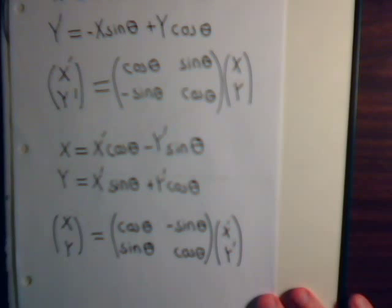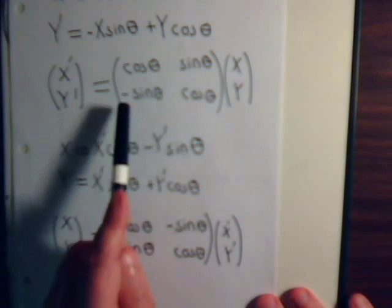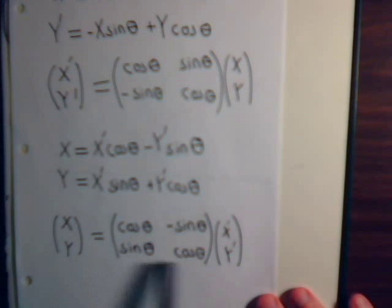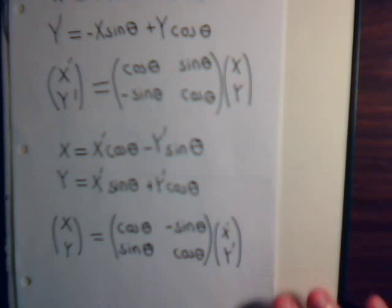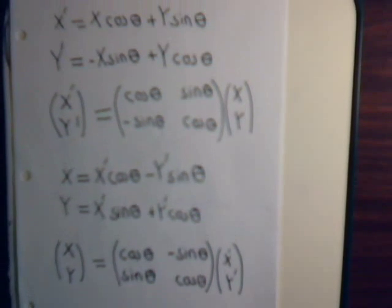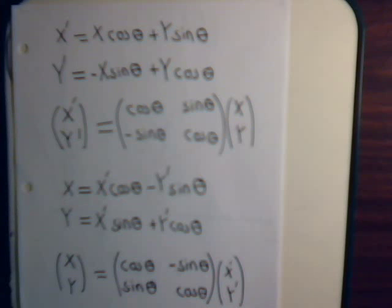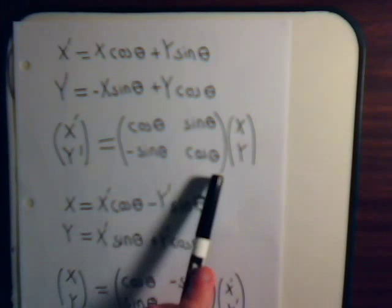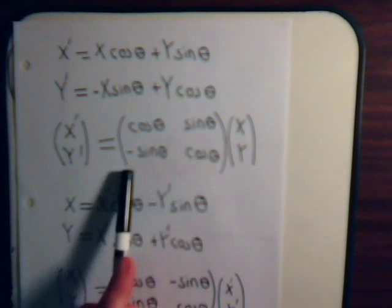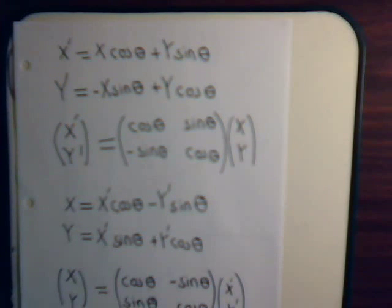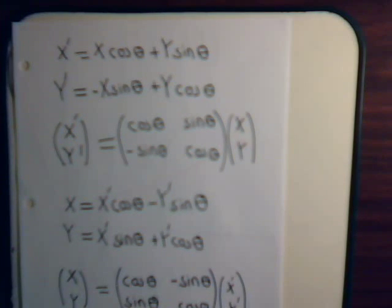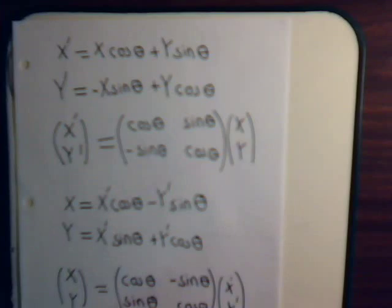Now since these are orthogonal matrices, this inverse would just be its transpose. Which sure enough, that's what we discovered. But what we want to do in this video is go back, pretend like we didn't know this, and say: here we have this matrix — what is its inverse? Not even realizing that the inverse is its transpose. How would we find that inverse?